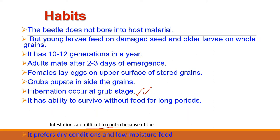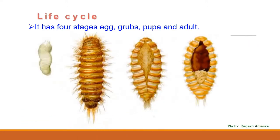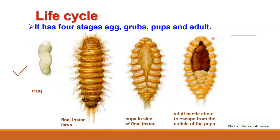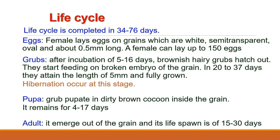The life cycle has 4 stages: eggs, grubs, pupa and adult. In this slide you can see the eggs in the first picture, then the final instar larva, then the pupa inside the skin of the final instar, and finally the adult beetle about to escape from the cuticle of the pupa. These are the 4 stages of the life cycle of Trogoderma granarium. The whole life cycle is completed in 34-76 days.